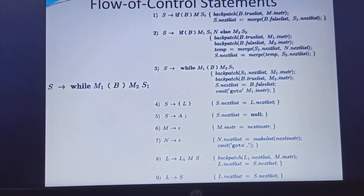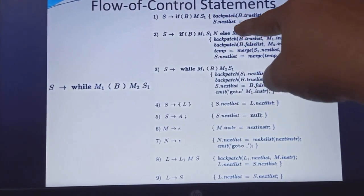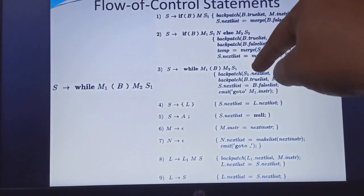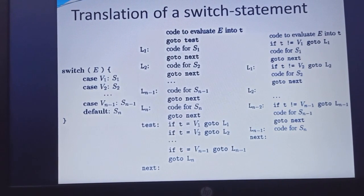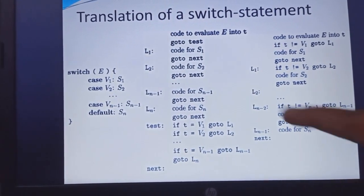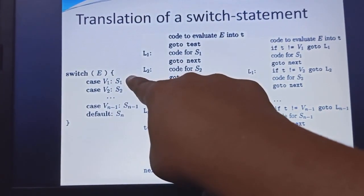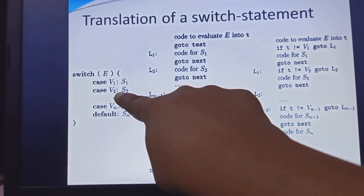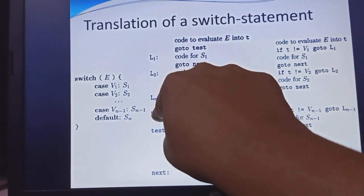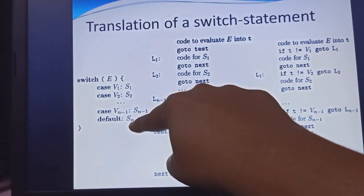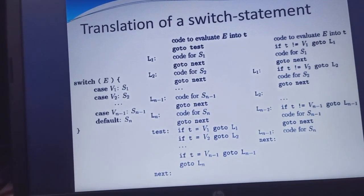Flow of control statements: first they take if B then statement S1. We already discussed if expression, if-else expression, and while expression. Here we additionally add the backpatching data with additional information. Translation of switch statements: switch case 1, case 2. If the condition is true it goes to case 1 and executes a statement. If it goes to case 2, statement 2 is executed. Likewise, up to case N-1, S N-1 statements are executed. If no case matches, the default statement is executed. This is the coding for the translation of switch statements.